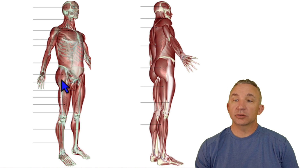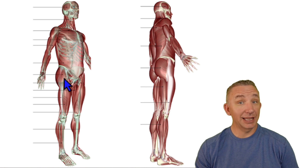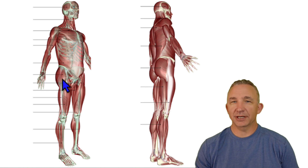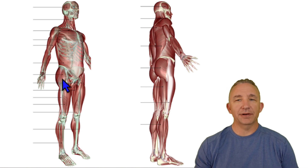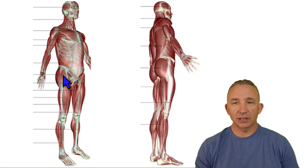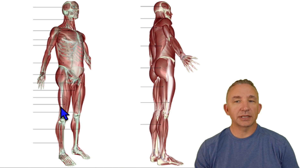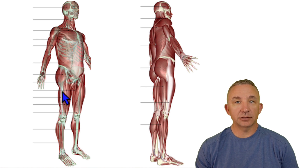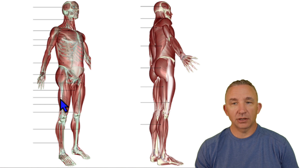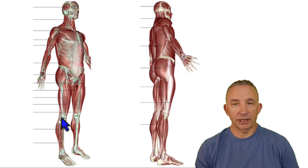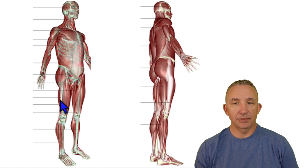Coming down to this muscle, tensor fascia latae — I often call it the 'coughing muscle.' Tensor fascia latae extends down and connects with what we call the iliotibial tract, or iliotibial band, or IT band, because this long tendon sheet comes all the way down to the lateral side right at the knee. So tensor fascia latae leads to that IT band.